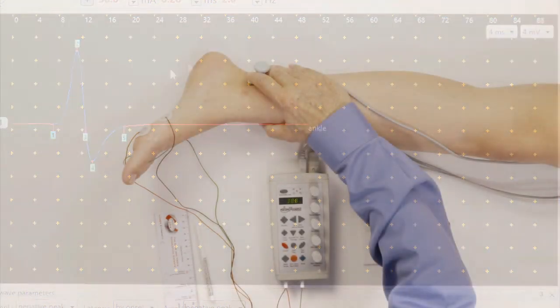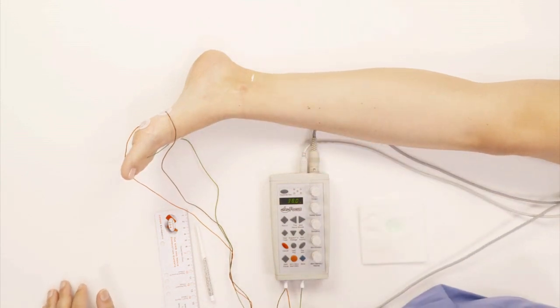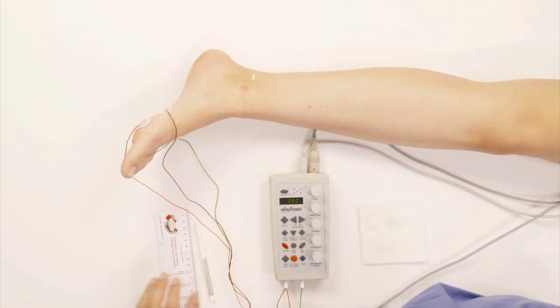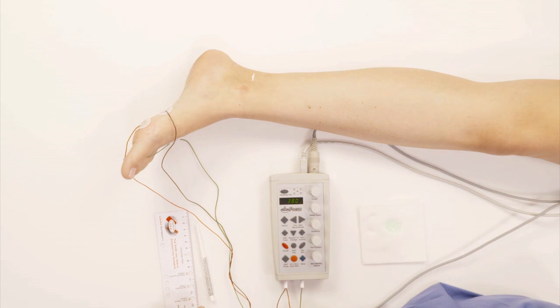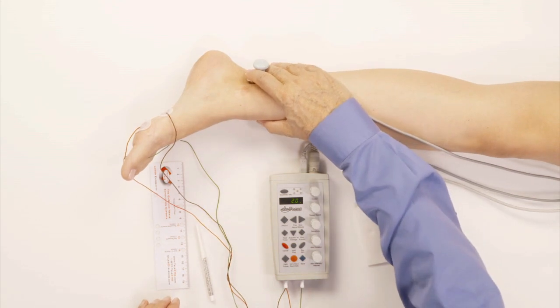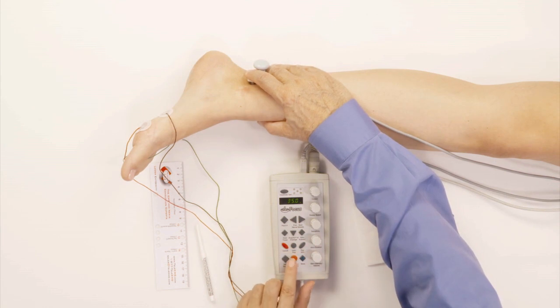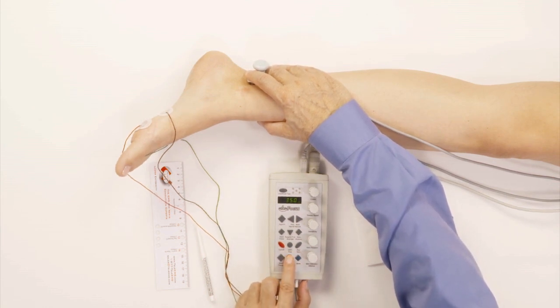The next study we're going to do is the tibial F wave. All I got to do is press next on the machine. We're going to get the F wave, which I stimulate right in the same place as I stimulated the tibial nerve. I go up on the stimulus intensity and I'm going to start stimulating.